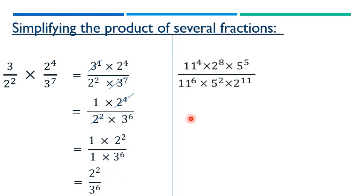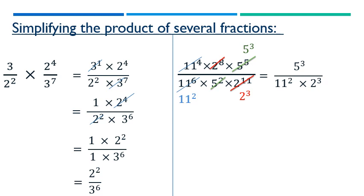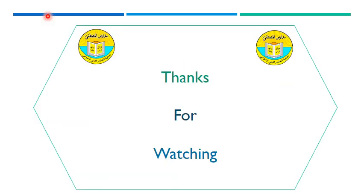The last example: 11 exponent 4 times 2 exponent 8 times 5 exponent 5, all over 11 exponent 6 times 5 exponent 2 times 2 exponent 11. Subtracting exponents for matching bases: 11 gives exponent 2 in denominator, 2 gives exponent 3 in denominator, and 5 gives exponent 3 in numerator. The final simplest term is 5 exponent 3 over 11 exponent 2 times 2 exponent 3. Thanks for watching.